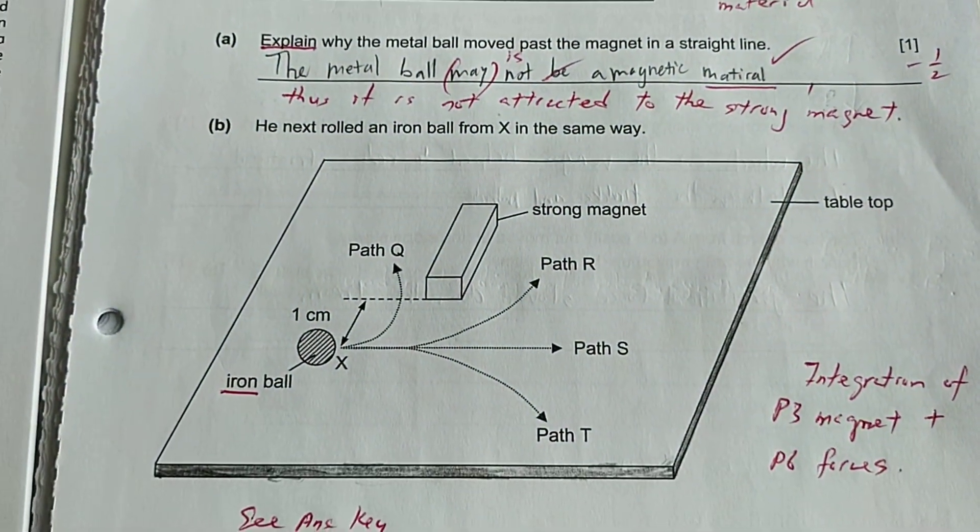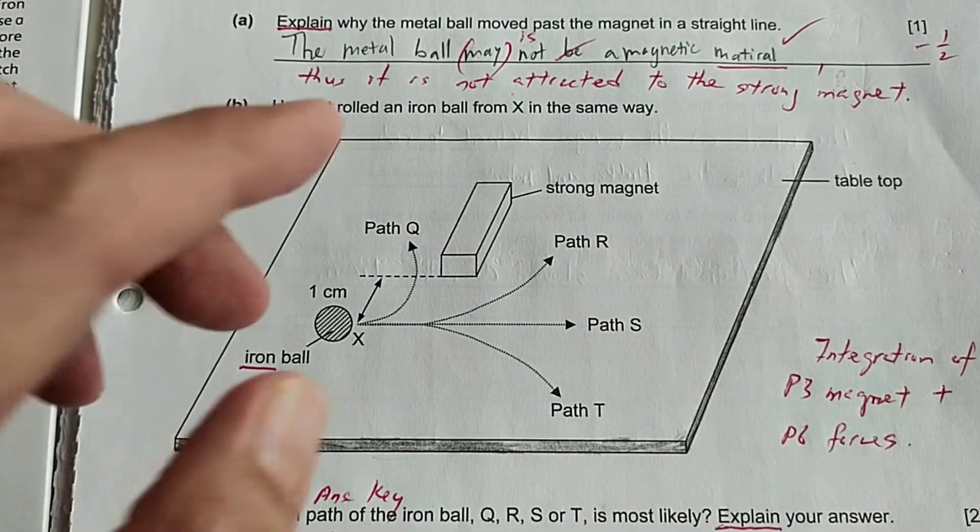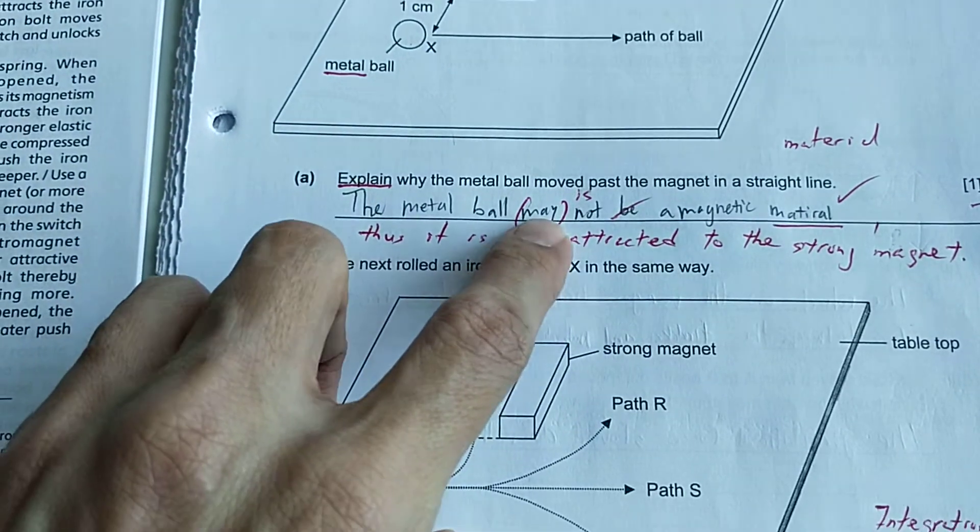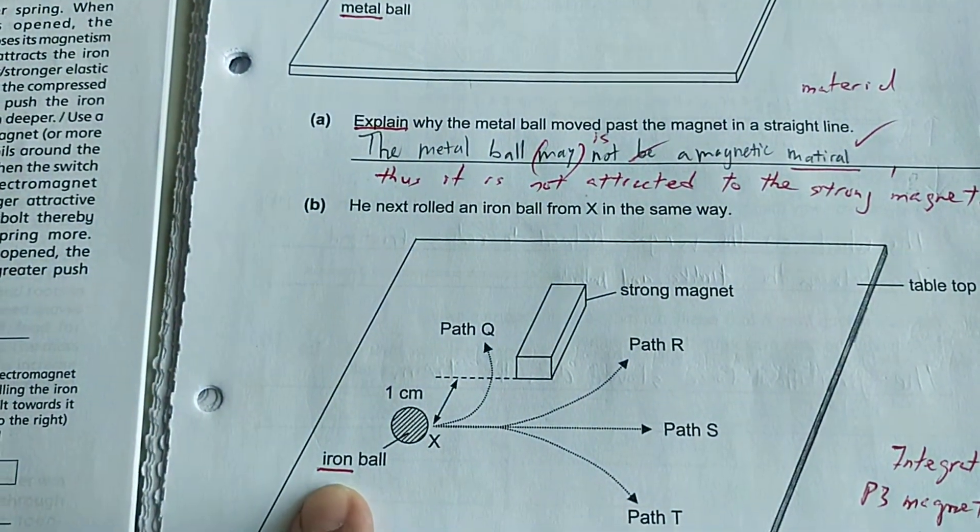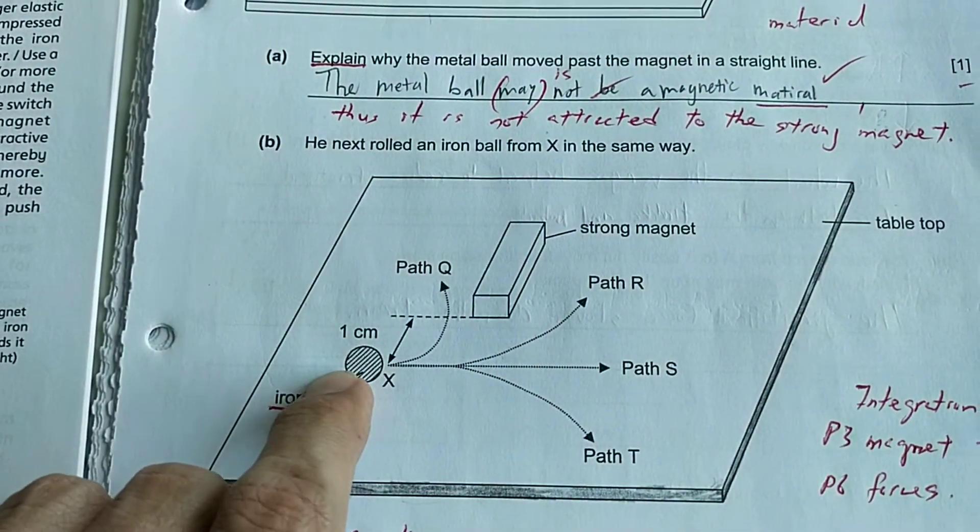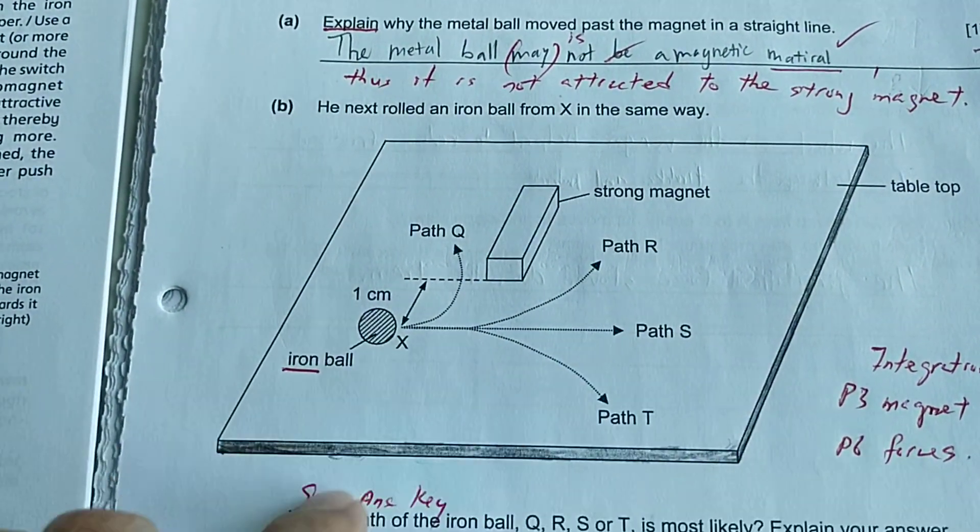Let's move on to the next part B. He next rolled an iron ball. Notice the first instance was a metal ball and now to be more specific they changed to iron ball. So I also underline here.